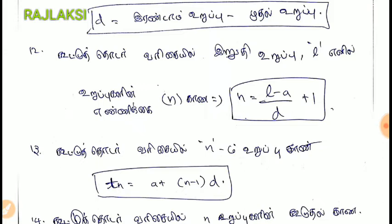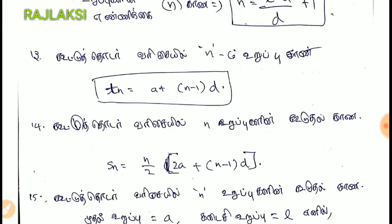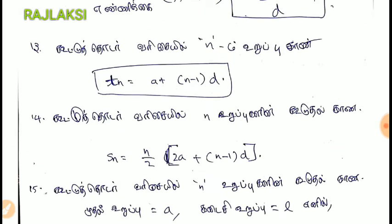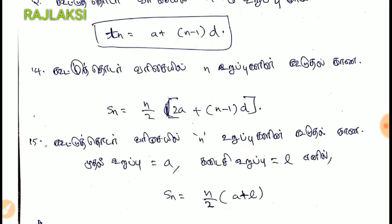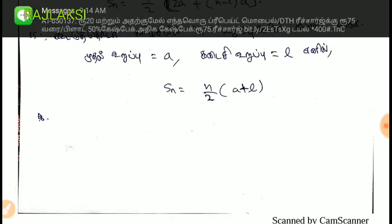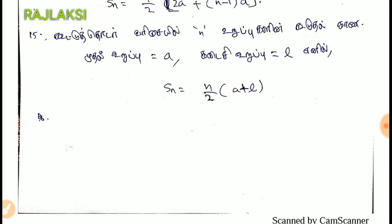The last term formula: A plus N minus 1 into D — the sum is solved. So when you have a sum of N, we can add N. The sum Sn equals N divided by 2 into 2A plus N minus 1 into D.